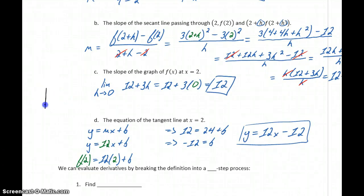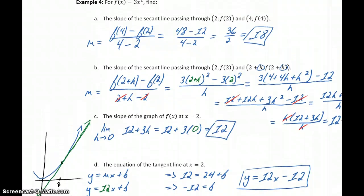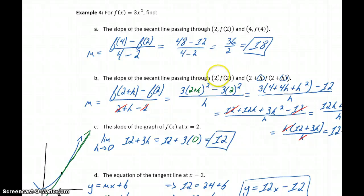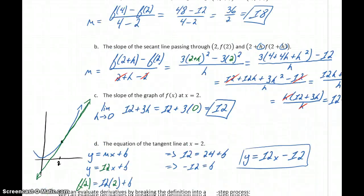So again, essentially what we've found here, just putting together a rough sketch of what this function would look like, at x equals 2 we have a point on our graph, and we found the slope of that line tangent to our function, as well as the equation for that line. So we essentially found the rate of change for our function, found the slope of our line at that point, but this was starting off with some specific value for x, so a specific x coordinate.